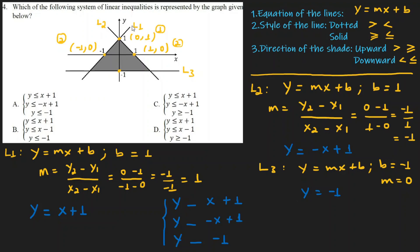For Line 1, the shaded region is downward, so it's less than or equal to. For Line 2, the shaded region is also downward, so it's less than or equal to. For Line 3, the shaded region is upward, so it's greater than or equal to. The solid line means or equal to.